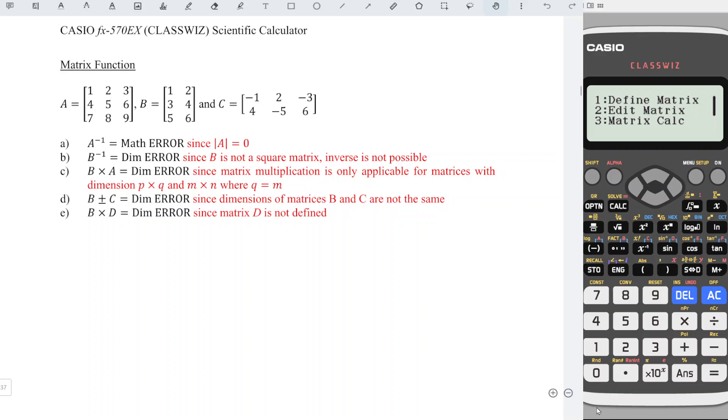Press option, define matrix. Now we should define matrix C. We have 2 rows and 3 columns: negative 1, 2, negative 3, 4, negative 5, 6. Done.